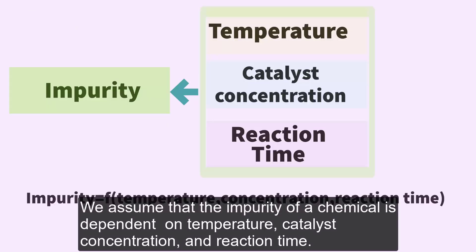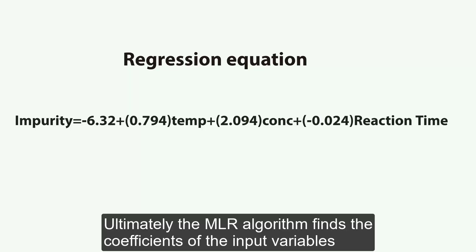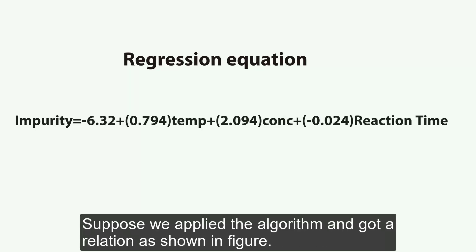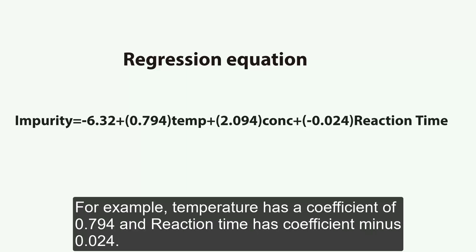For example, assume that the impurity of a chemical is dependent on temperature, catalyst concentration, and reaction time. The MLR algorithm finds the coefficients of the input variables. Suppose we apply the algorithm and get a relation as shown in the figure. For instance, temperature has a coefficient of 0.794 and reaction time has a coefficient of -0.024.